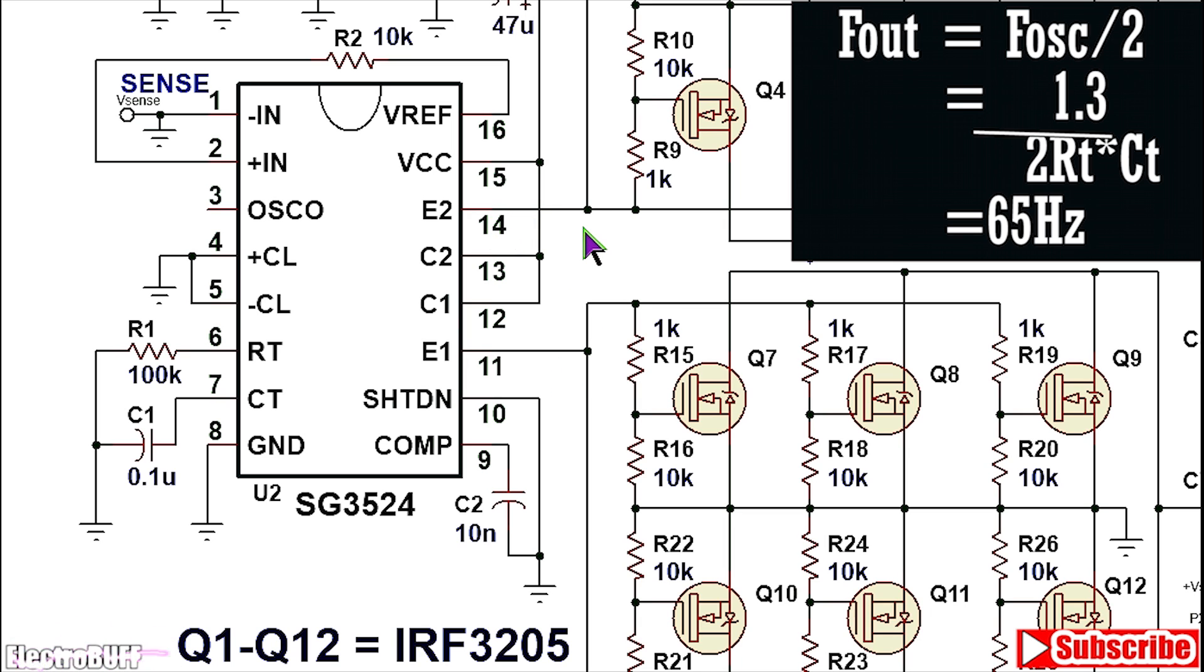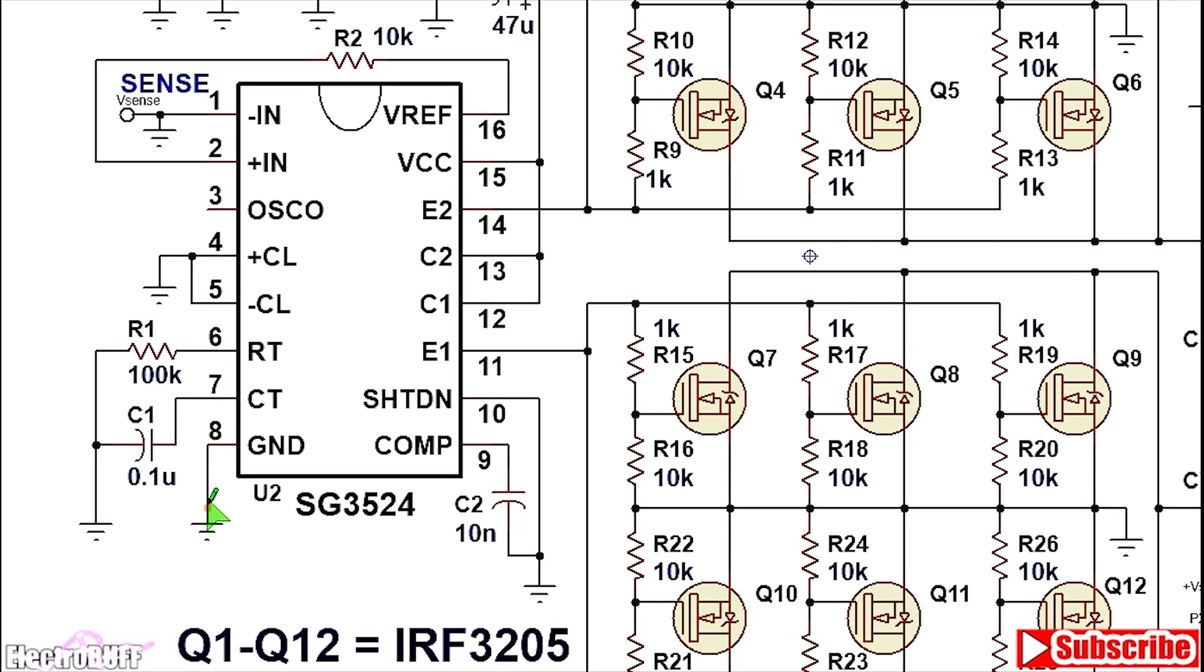The final output at E2 and E1 will be half of that which will give you 65 hertz which is quite okay. The frequency formula is 1.3 over R1 multiplied by C1. Pin 8 is ground which is the power ground and the logic ground for the circuit shown.